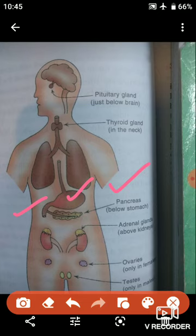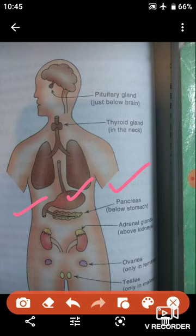The adrenalin hormone prepares our body to function at maximum efficiency during emergency situations. In emergency situations, it prepares our body for maximum functioning — for example, during danger, fear, shock, surprise, or anger — such as when being chased by a ferocious dog.